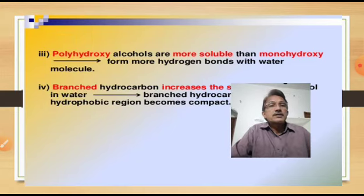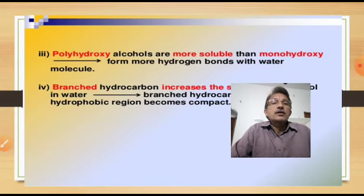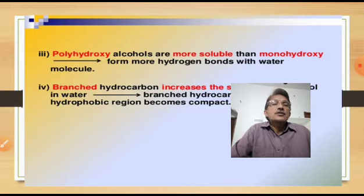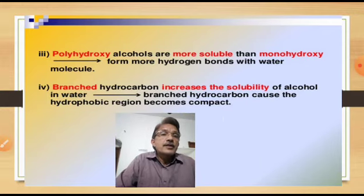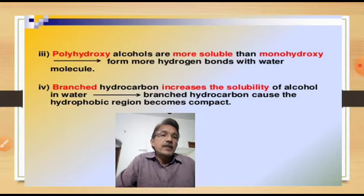Polyhydroxy alcohols are more soluble than monohydroxy alcohols because they form more hydrogen bonds with water molecules. For example, glycerol is a polyhydroxy alcohol and is more soluble than methanol because glycerol forms more hydrogen bonds with water molecules. Branched hydrocarbon also increases the solubility of alcohol in water because branching causes the hydrophobic region to become more compact.